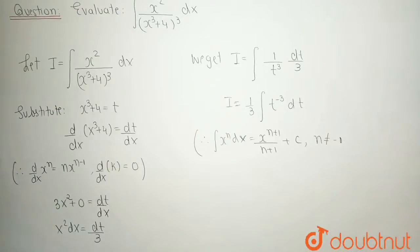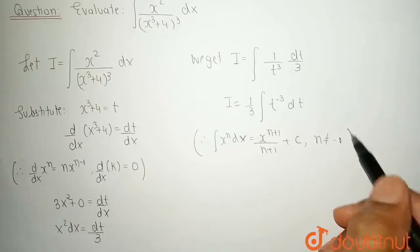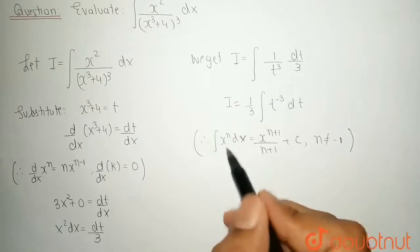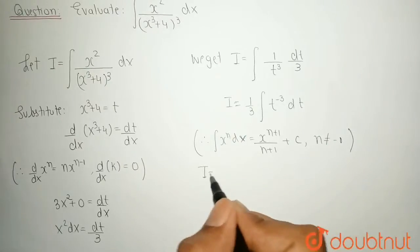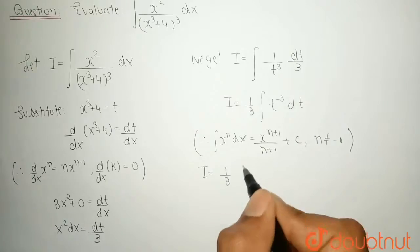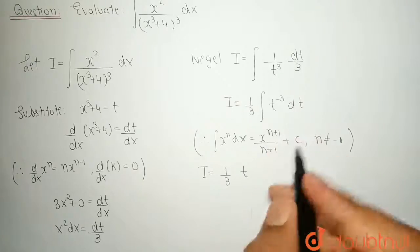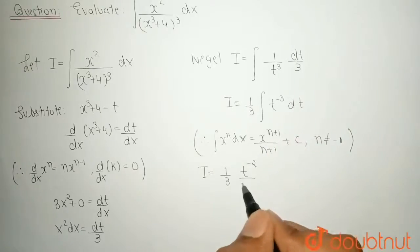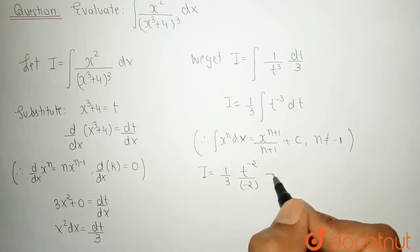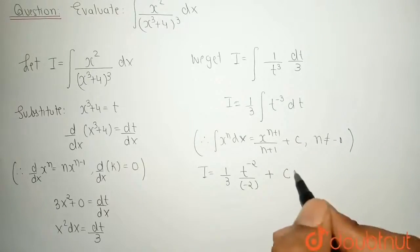That means n belongs to all real numbers except minus 1 is valid on this formula. So, the value of integral is 1 upon 3, t to the power minus 3 plus 1 becomes minus 2 and denominator also becomes minus 2 plus c. Where c is an integration constant.